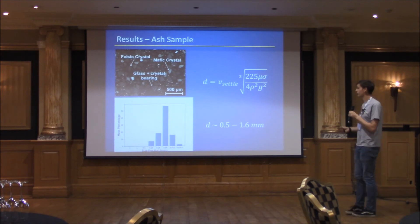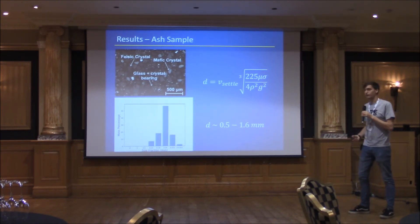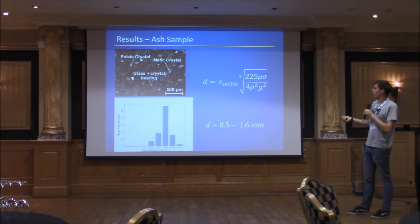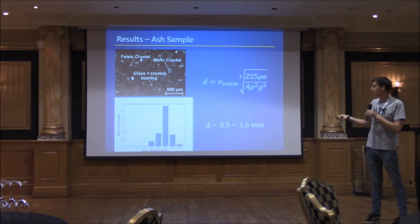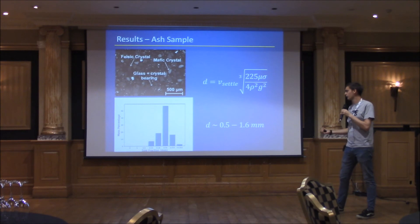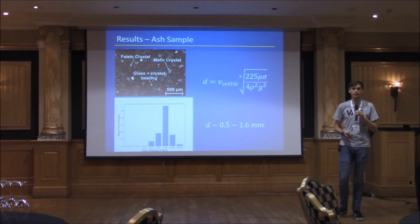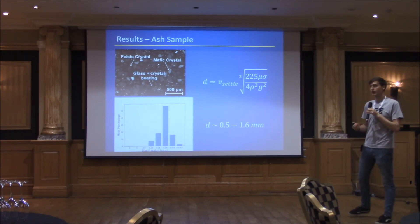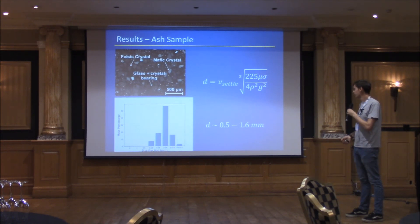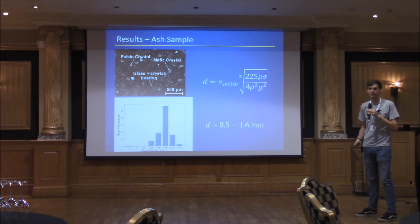We then compared our results to ash samples collected on the ground — taken two days after the explosions we measured with our cameras, as we couldn't do both simultaneously in the field. A backscattered electron image of the ash sample was used, and the samples were size-sorted using dry sieving, with particle diameters typically between about 0.05 and 0.2 millimetres. Using a terminal settling velocity equation with our measured settling speeds, we derived diameters of about 0.05 to 0.16 millimetres — these line up very nicely with the ground measurements.